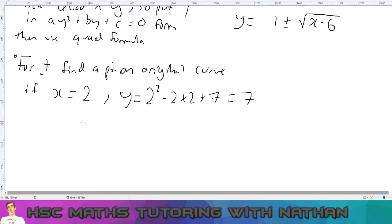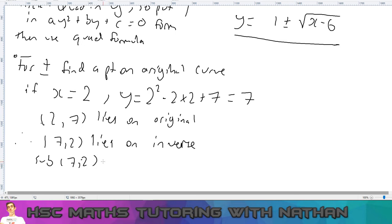Okay, so we find a point that lies on the original curve. So the point (2, 7) lies on the original. So the trick here is therefore (7, 2) lies on the inverse, right? Because remember the inverse means swap x and y, so you swap them around. So now I have a point that lies on this equation here. So what you can do is just sub 7, 2 in. So then that becomes 2 equals 1 plus or minus square root 7 minus 6. So 2 equals 1 plus or minus square root 1.